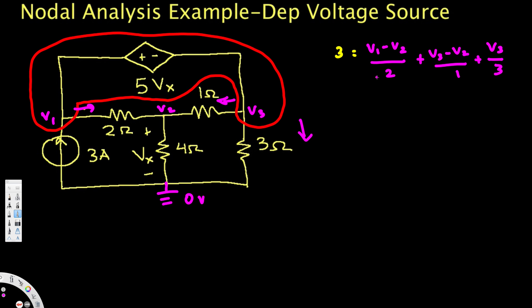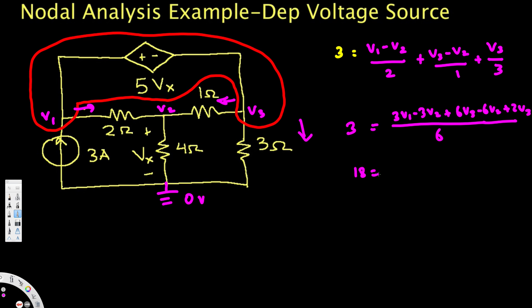To simplify, we take the common denominator of 6. This gives: 3(V1 − V2) + 6(V3 − V2) + 2V3 = 3×6 = 18. Combining terms: 3V1 − 9V2 + 8V3 = 18. Let's call this Equation 1.